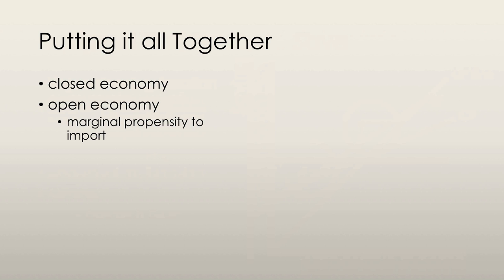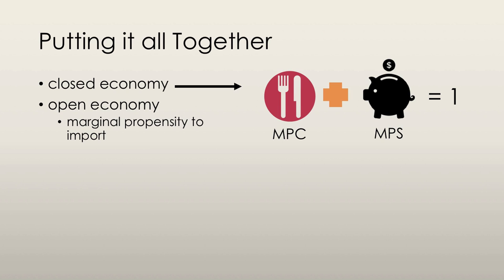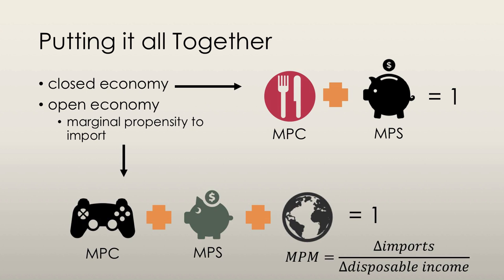Now, how does MPC relate to MPS? In a closed economy, consumers either spend their income on consumer goods or they save it, so marginal propensity to consume plus marginal propensity to save equals one. In an open economy, we're engaging in international trade, so some consumption goes toward imports. That changes real GDP, so the new equation is: marginal propensity to consume plus marginal propensity to save plus marginal propensity to import equals one. Marginal propensity to import is calculated as change in imports divided by change in disposable income.